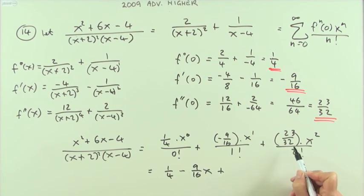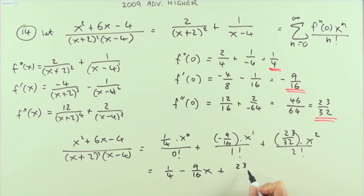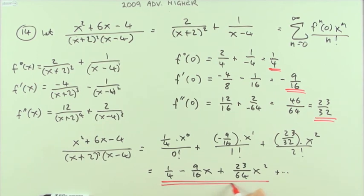We'll make that 23/64 x² ... I'll just put plus, even though it would probably be negative next, dot dot dot. But it's only the first three that I was interested in. So there's the first three. That wasn't too bad.